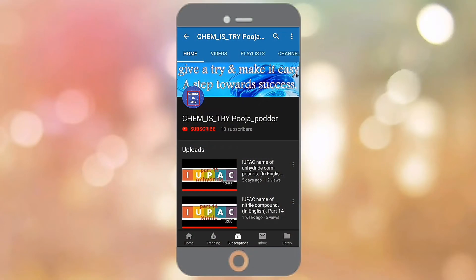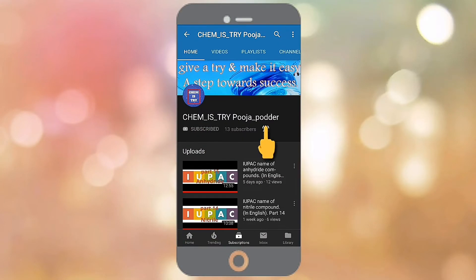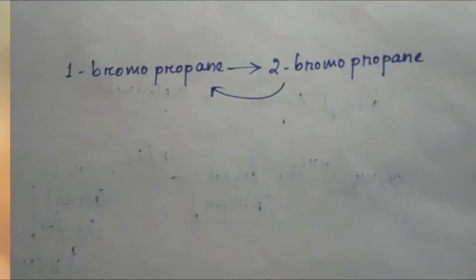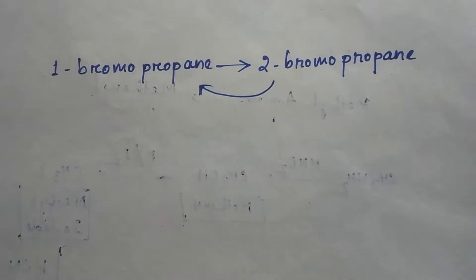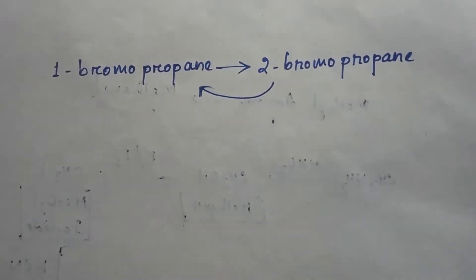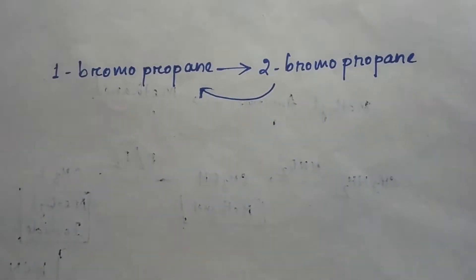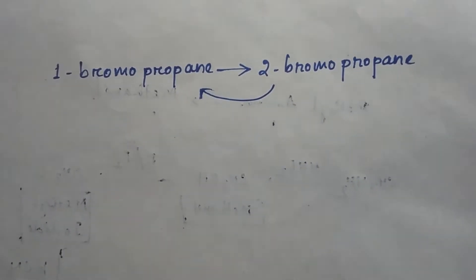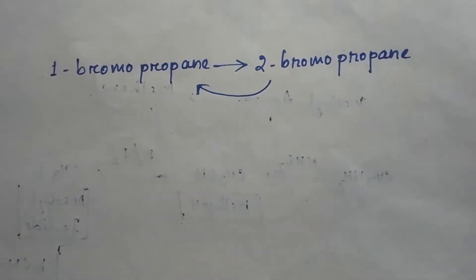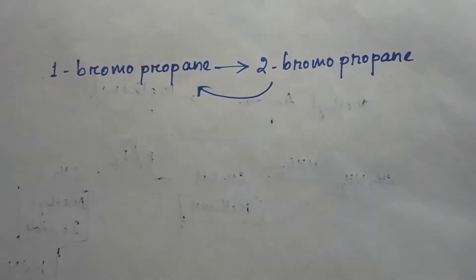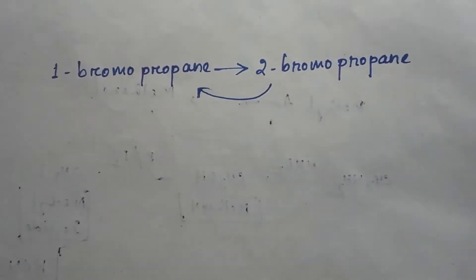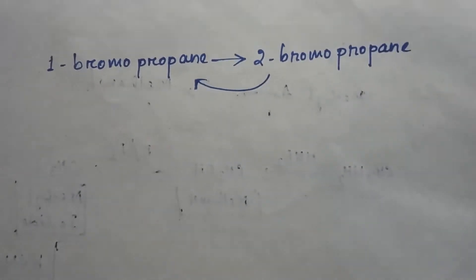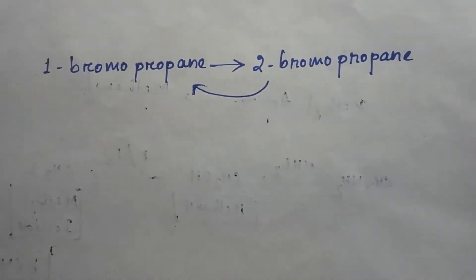Hello everyone, welcome to my study channel chemistry. Subscribe to my channel and press the bell icon to get more new updates. Today we are going to do one chemical conversion from 1-bromopropane to 2-bromopropane, and also the reverse process — that is 2-bromopropane to 1-bromopropane. This is a very simple conversion, so let's start.